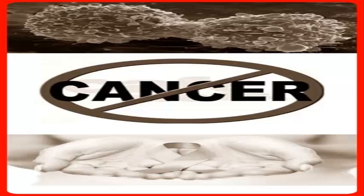There are benign and malignant tumors. Only a malignant tumor is cancer. Benign growths do not grow into other tissues and they do not spread through the body. An example of a benign tumor is a fibroid in the uterus or a wart. Such a tumor may press against surrounding tissues or organs, which can be a reason to remove it.